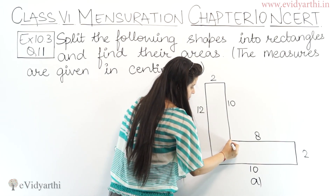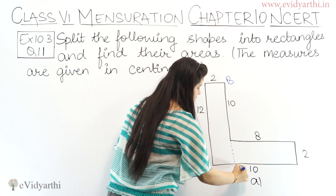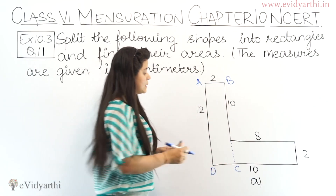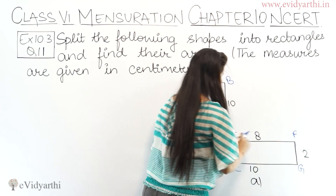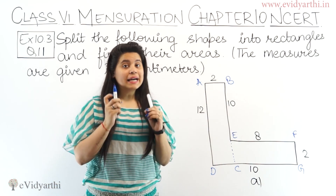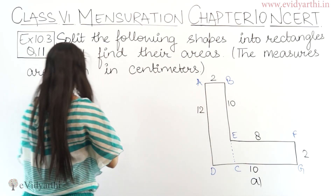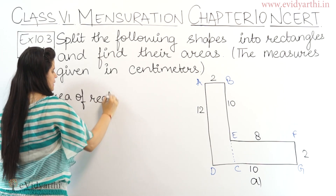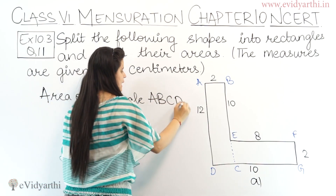Let's divide it like this. Now let's name the points A, B, C, D and E, F, G, C. So we have two rectangles. Now let's find the area of rectangle ABCD.